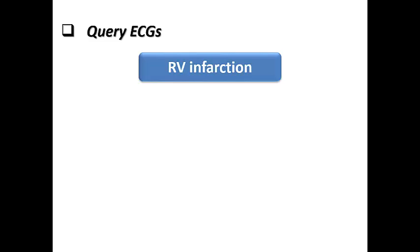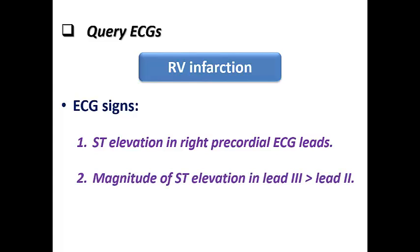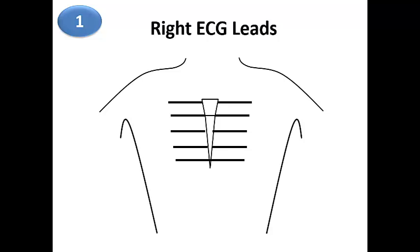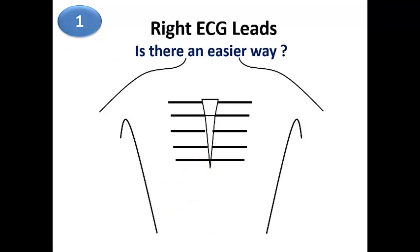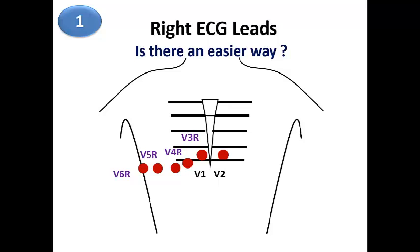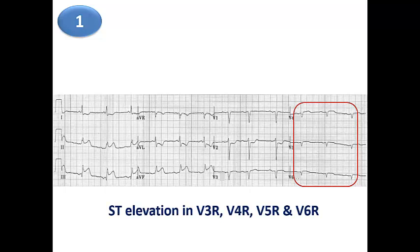Moving to RV infarction: the ECG signs include ST elevation in right precordial leads, magnitude of ST elevation greater in lead III than in lead II, and ST elevation in V1 more than 2 mm. The most common way to perform right-sided ECG leads is to place precordial leads in a mirror image to the standard left-sided positions. An easier method is to move V4, V3, V5, and V6 to the right side of the chest while leaving V1 and V2 in place. In this ECG example, V4R, V5R, and V6R show ST elevation as a sign of RV infarction together with inferior STEMI visible in the limb leads.